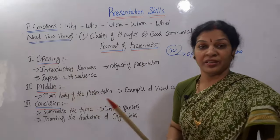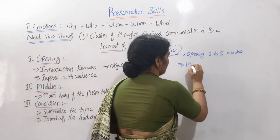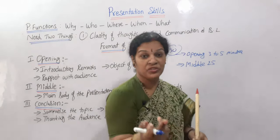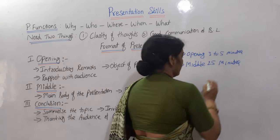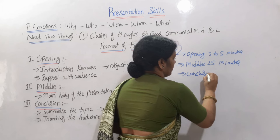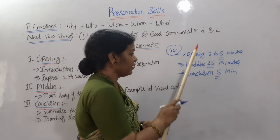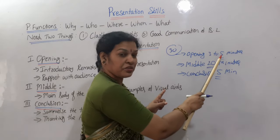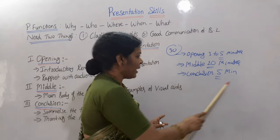If you have 30 minutes for your presentation, divide it like this: Opening — 3 to 5 minutes. Middle, the main part — 20 to 25 minutes. Conclusion — 5 minutes. You can adjust these as needed, for example: 5 minutes introduction, 20 minutes main presentation, 5 minutes closing. You can increase or decrease as you want, but planning should be like this. That is the perfect presentation planning.